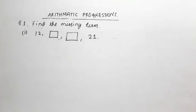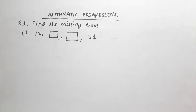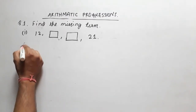Hello students, welcome to the channel. We will solve arithmetic progression questions together — finding the missing terms. In this question, we have a sequence where the first term is 12, the second and third terms are missing, and the fourth term is 21. We need to find these two missing numbers.